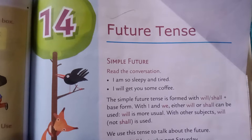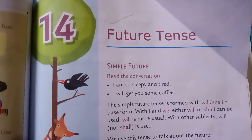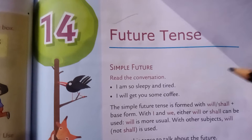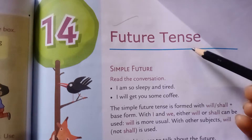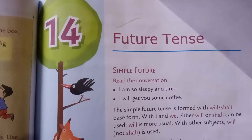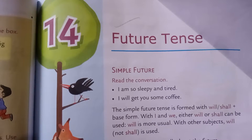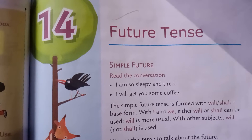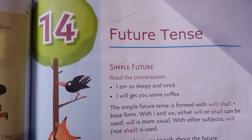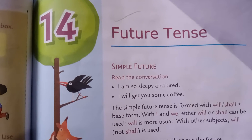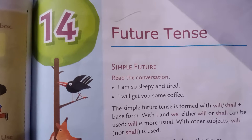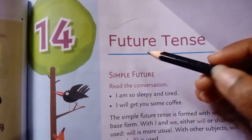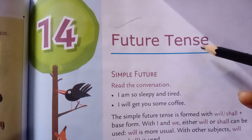Good morning students. Today we will be starting a new chapter, chapter number 14: Future Tense. As you know, we have completed the present and the past tense. Future tense is something which is going to happen — any event which is going to happen comes under Future Tense.